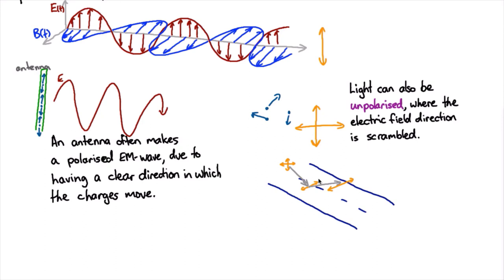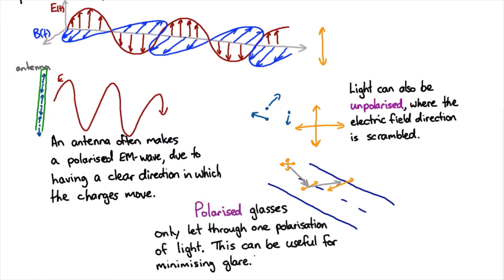And that's why sunglasses tend to be polarized. A polarized piece of glass only lets through particular polarizations of light. And the idea with sunglasses, if they only let through the vertical polarization of light, then they're going to make most things darker because most light is unpolarized. So you lose half the light of everything.